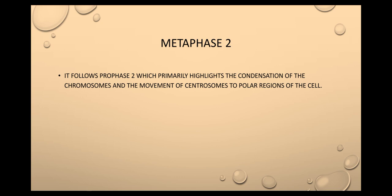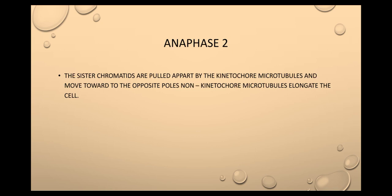Next, metaphase two follows prophase two, which primarily highlights the condensation of chromosomes and the movement of chromosomes to the polar regions of the cell. Then, anaphase two: the sister chromatids are pulled apart by the kinetochore microtubules and moved to the opposite poles, while non-kinetochore microtubules elongate the cell.